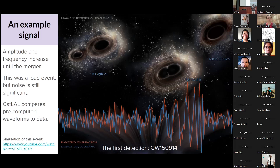GstLAL searches for these pre-computed waveforms. Because we know what the signal should look like, we can actually pull the signals out of really noisy data. The signals are very, very weak — the effects are very, very small — so naturally we're always dealing with noise in the detectors.